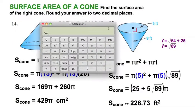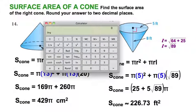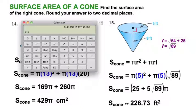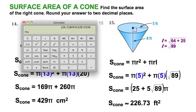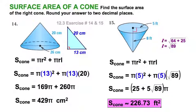Let's pull up the calculator. I'm going to take 5 radical 89 — I'll take the square root of 89 and multiply times 5. Then I'll add 25 to get 25 plus 5 radical 89. Then I'll multiply times pi. Rounding to the nearest hundredths place, you can see 226 and 73 hundredths. Then we put in the unit — square feet.